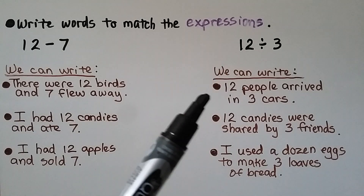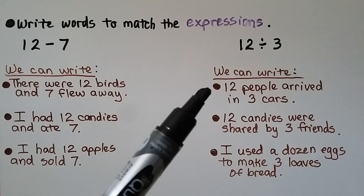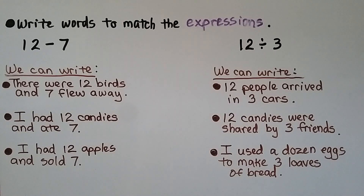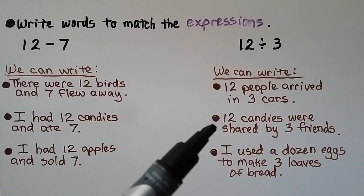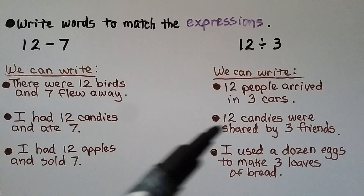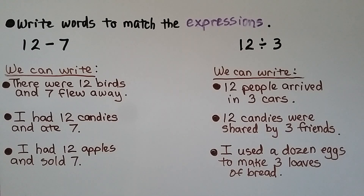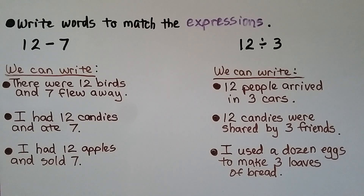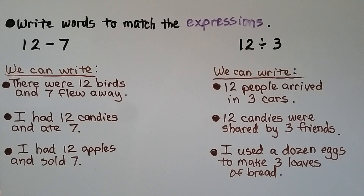If we have 12 divided by 3, we can write: '12 people arrived in 3 cars' — 12 divided by 3 tells how many people were in each car. Or '12 candies were shared by 3 friends' — 12 divided by 3 tells how many candies each friend got. Or 'I used a dozen eggs to make 3 loaves of bread' — 12 divided by 3 tells how many eggs were used for each loaf. These are examples of what you can write to fit expressions like 12 minus 7 or 12 divided by 3.